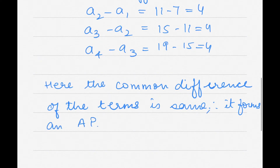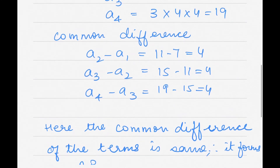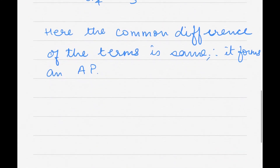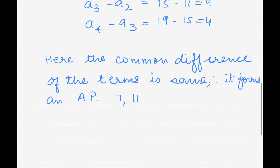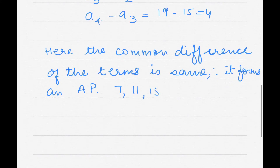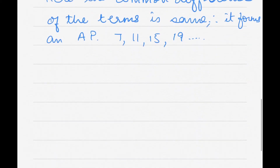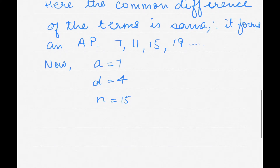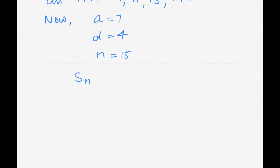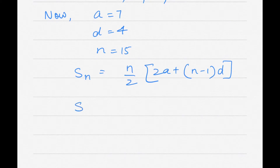So the AP is 7, 11, 15, 19, and so on. The first term a = 7, common difference d = 4, and we need n = 15 terms. Using the sum formula: Sn = n/2 × (2a + (n−1)×d).